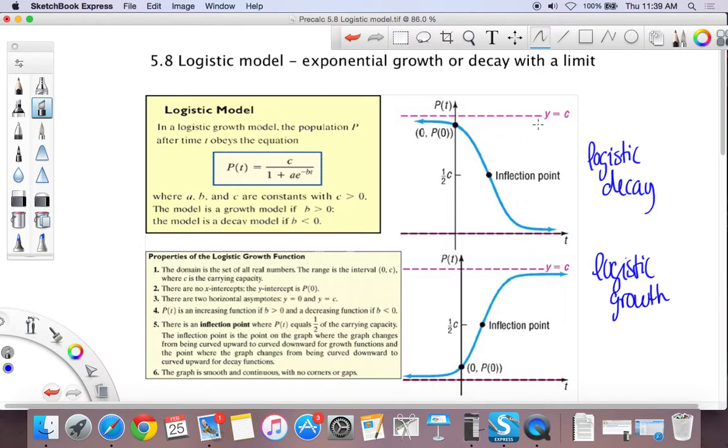If it's growth, that means we start with an initial population and then the population grows for a while and then it stops growing as it approaches the asymptote. That value up here, that's c, that's usually called the carrying capacity of the model. That means that's the maximum that's supported by the environment, whether it's the maximum number of bacteria in a petri dish or the maximum number of fish in a pond.